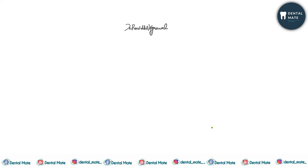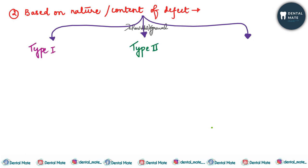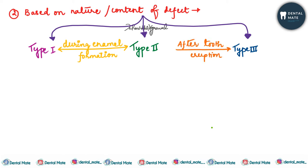If we talk about the types of enamel lamellae based on nature or content of the defect, it could be classified into three subtypes: Type 1, Type 2, and Type 3. Type 1 and Type 2 are produced during the enamel formation — they are pre-eruptive — whereas Type 3 is formed after the tooth eruption and would be classified as post-eruptive. Type 1 basically consists of poorly calcified enamel rods.